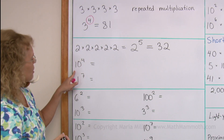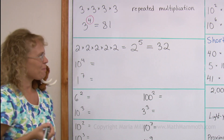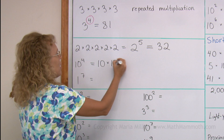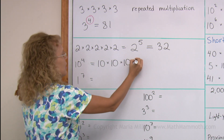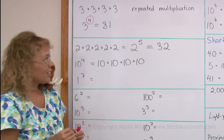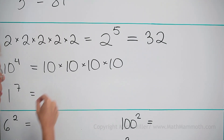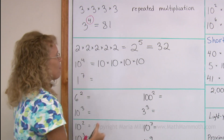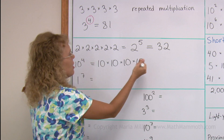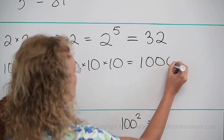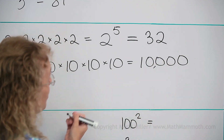How about 10 to the fourth power? It would mean 10 multiplied by itself four times. Remember there's a shortcut: whenever you multiply by 10, you tag a zero after the number. So 10 times 10 times 10 times 10, or 100 times 100, gives you 1 followed by four zeros — that is 10,000.